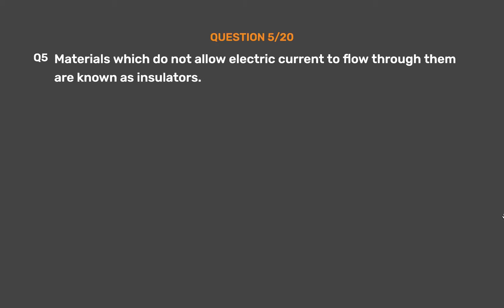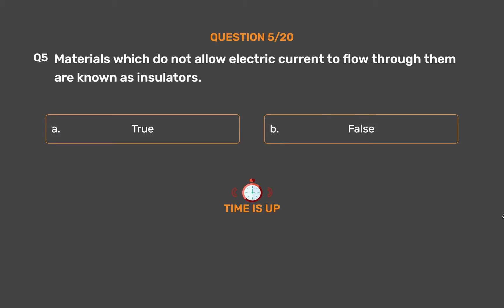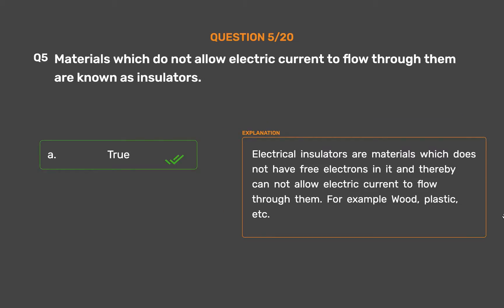Question number 5. Materials which do not allow electric current to flow through them are known as insulators. Option A: True. Option B: False. The correct answer is Option A, True. Electrical insulators are materials which do not have free electrons in them and thereby cannot allow electric current to flow through them. For example, wood, plastic, etc.